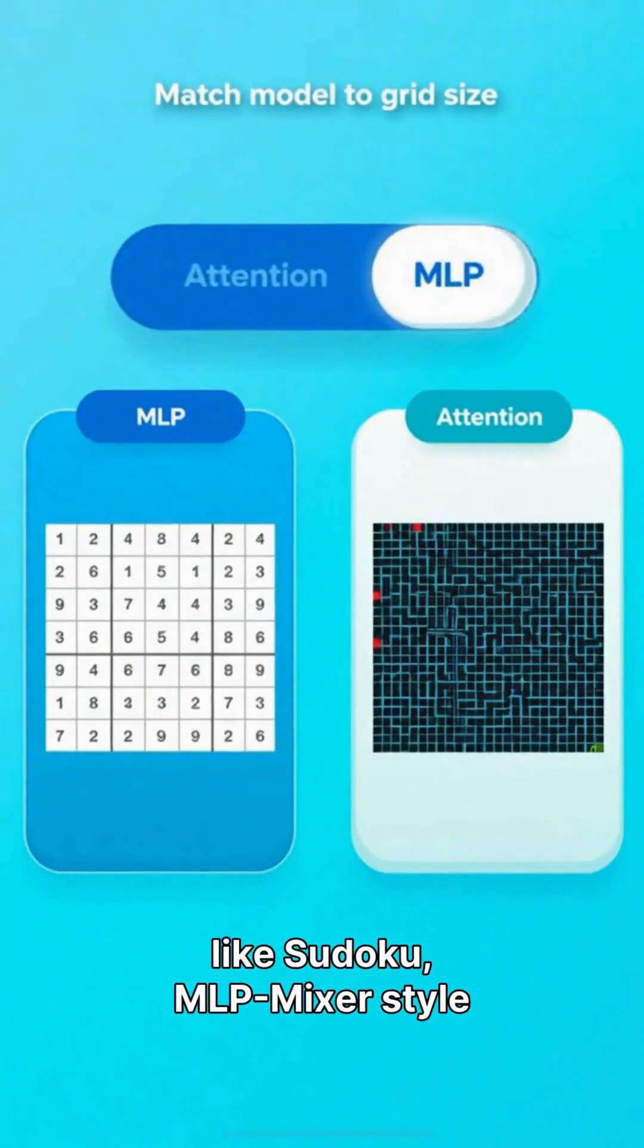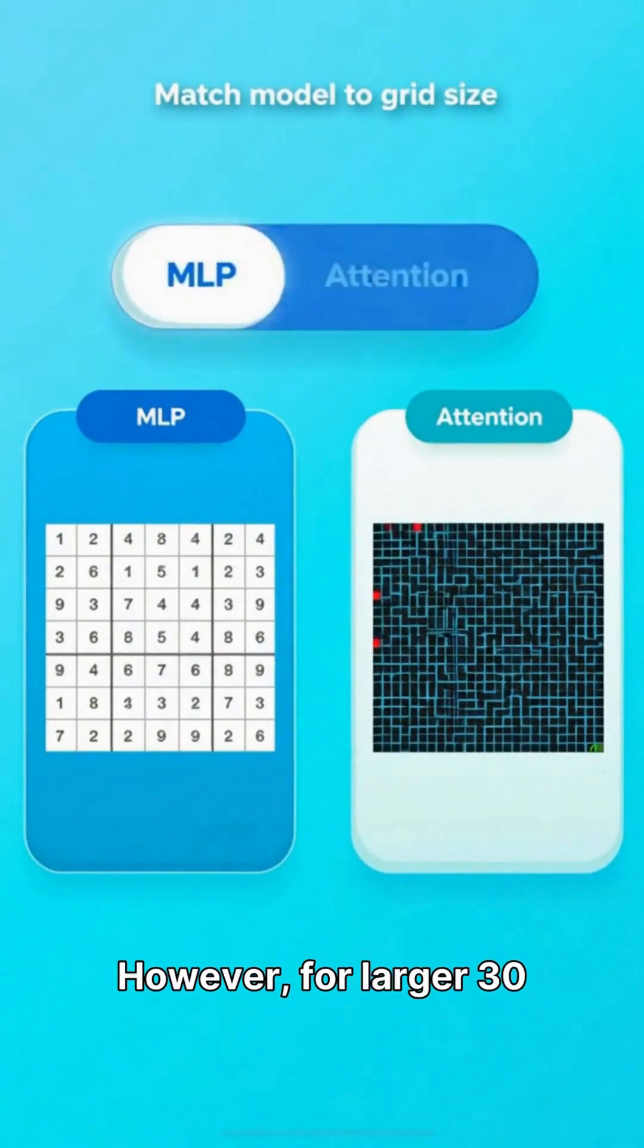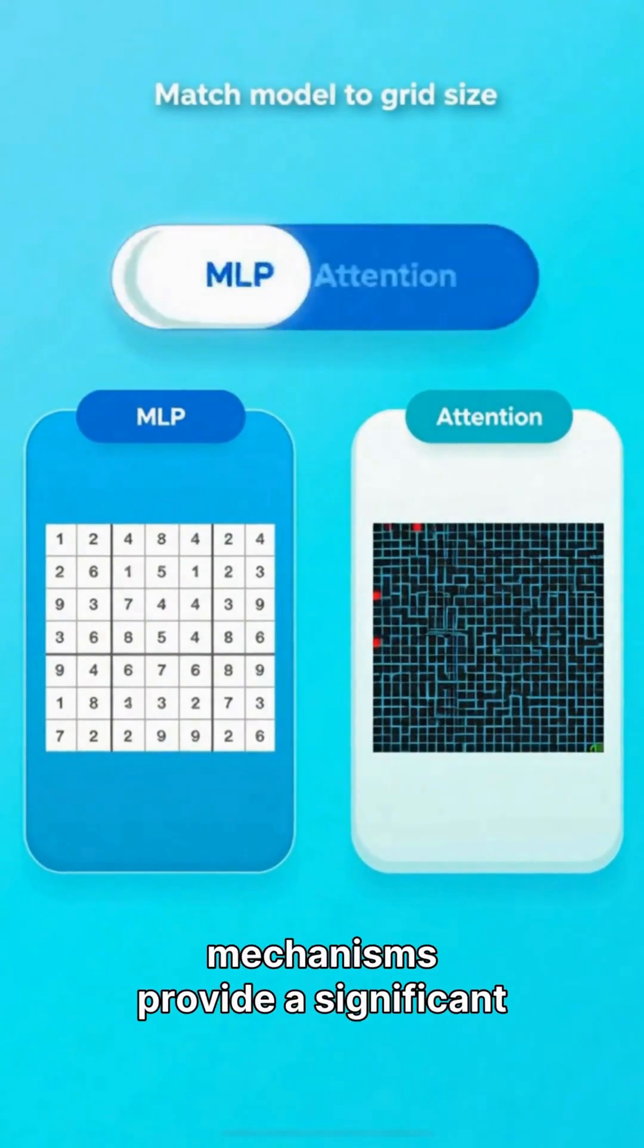For small grid puzzles like Sudoku, MLP mixer-style blocks prove highly effective. However, for larger 30-30 tasks such as complex mazes, attention mechanisms provide a significant advantage.